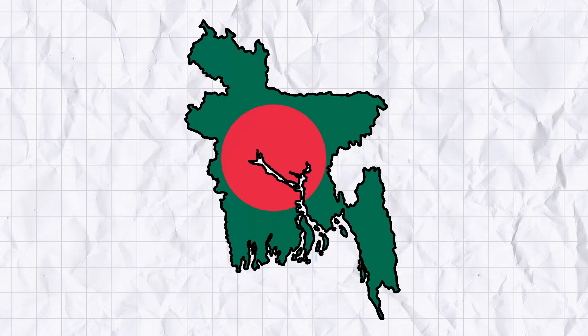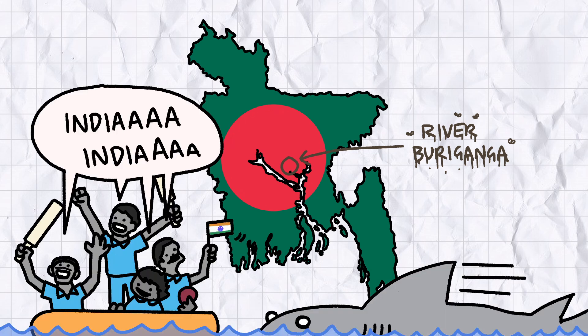If you're from Bangladesh, you might have heard of the Buriganga River, which runs through the capital city of Dhaka. You might have also heard it's one of the most heavily polluted rivers in the world, and that swimming in it is about as good an idea as taking out a celebratory barge for the Indian national cricket team.